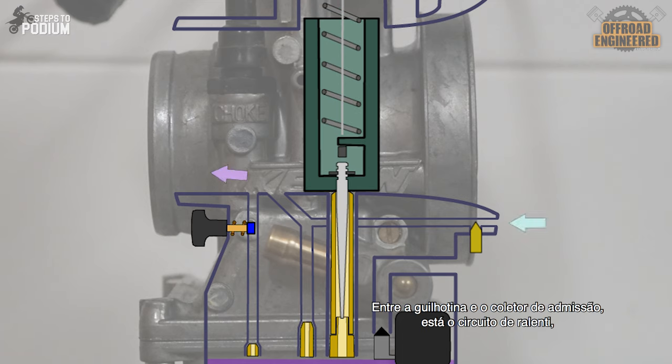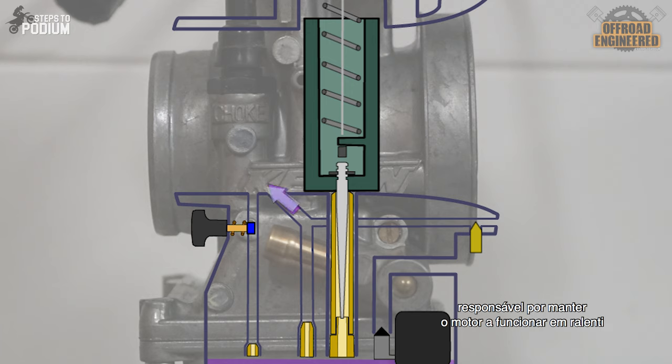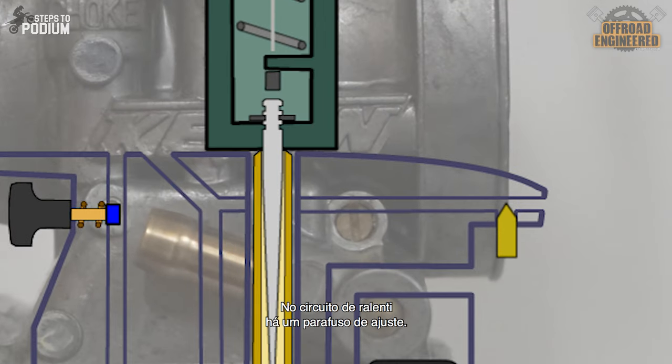Between the slide and the inlet manifold there's the idle circuit which is responsible for feeding the engine during idle and up to 1/8th of throttle through the pilot jet. On the idle circuit there's also an adjustment screw which allows some tunability of the air fuel ratio of the idle mixture.